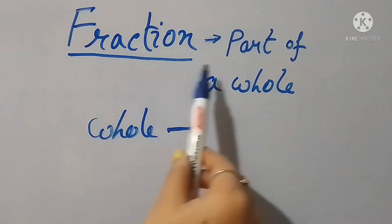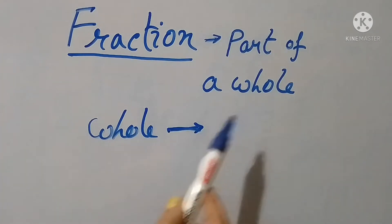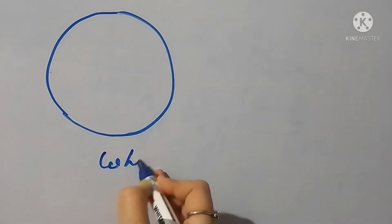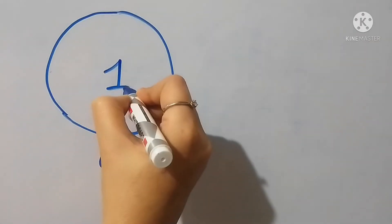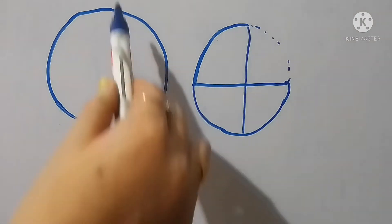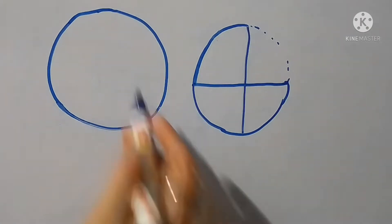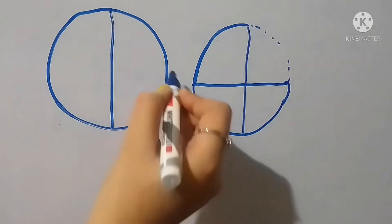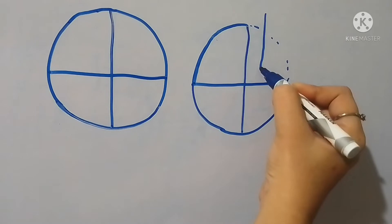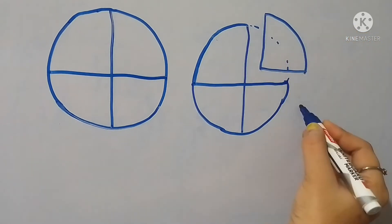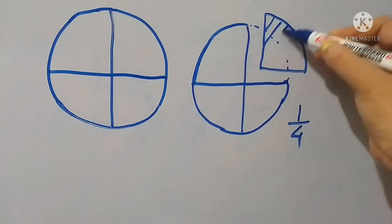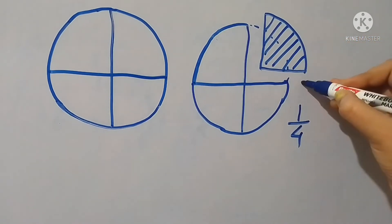Fraction means part of a whole, and whole means one. Suppose your mother gave you a cake — here the whole cake is one. Mother told you to divide the whole cake into four equal pieces and told you to eat one of the four equal parts. Now you divided the cake into four equal pieces and took one of the four pieces. The fraction of that part will be one-fourth, or one by four.